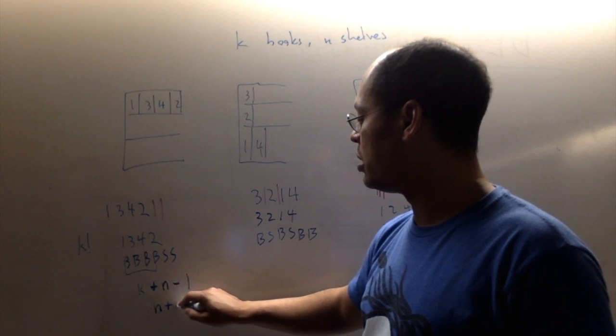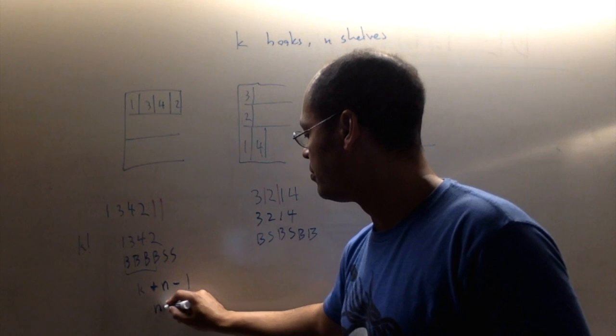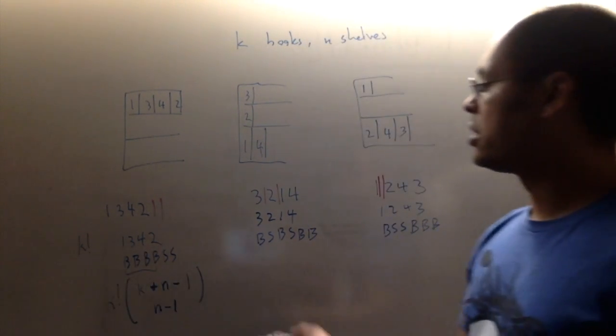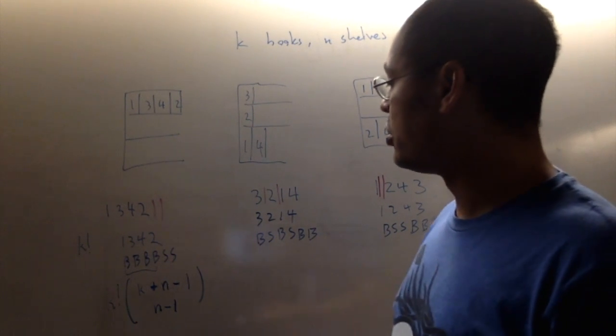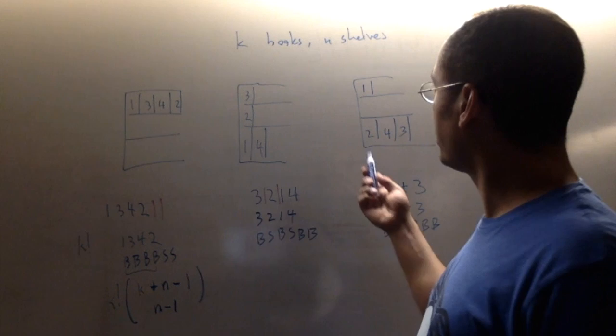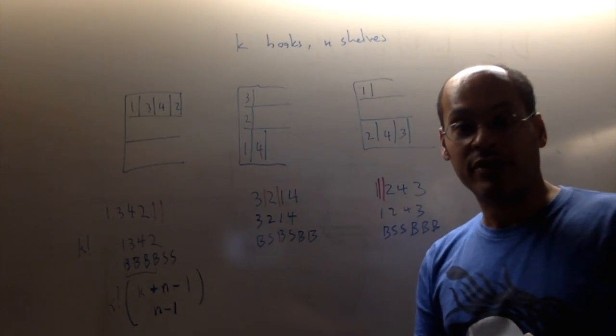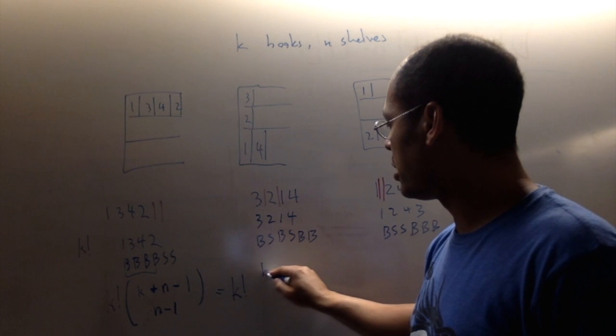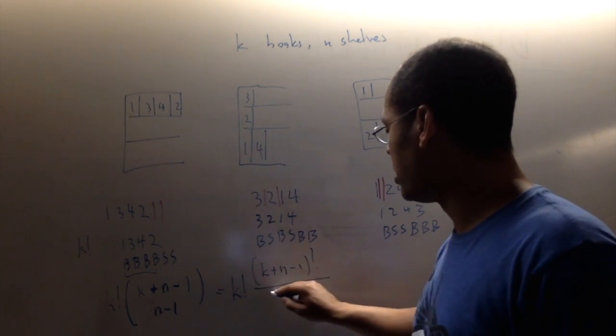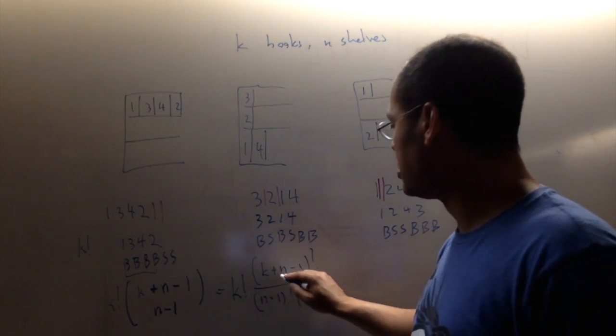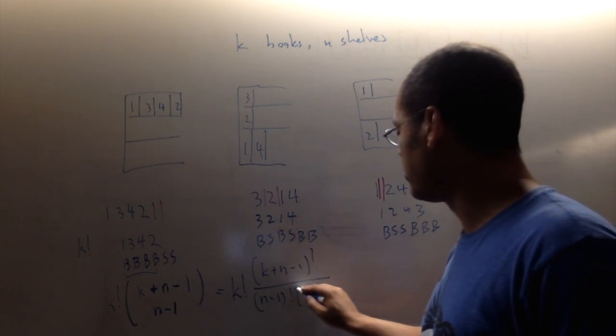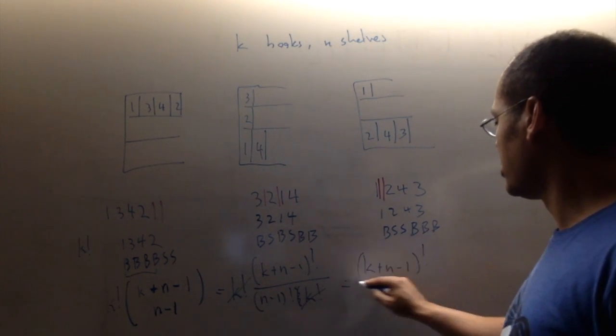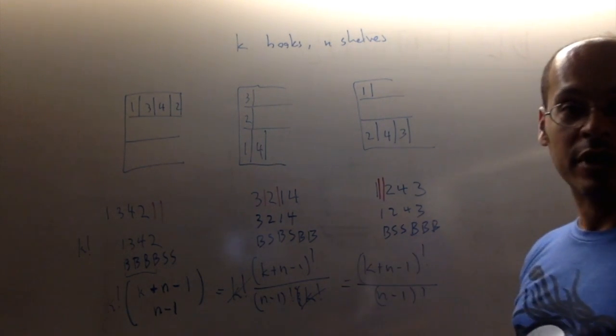And then I'm going to choose which n minus one of them are shelf separators. So from k plus n minus one, I'm going to choose which n minus one are shelf separators. And so altogether, I get k factorial times k plus n minus one choose n minus one, is the number of ways of placing the k books onto the n shelves. And before I move on, I should say, what is this thing if we break it down? That's k factorial times k plus n minus one factorial divided by n minus one factorial times k factorial. And these k factorials cancel. And actually, the answer that we get is k plus n minus one factorial divided by n minus one factorial, which was the formula that we got earlier for this.